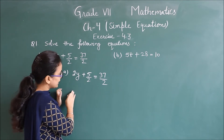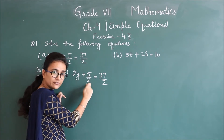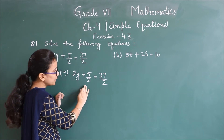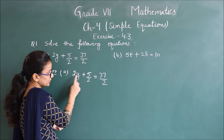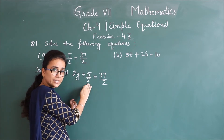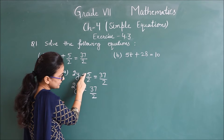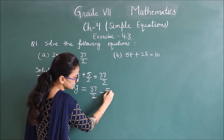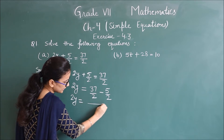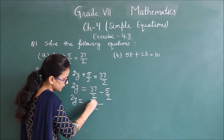तो हमने क्या करना है? पहले हम step by step हर एक step mention करते थे — जैसे 5 by 2 को हटाने के लिए minus 5 by 2 करते हैं दोनों तरफ, फिर 2y में से 2 को remove करने के लिए 2 से divide करते हैं। अब हम इस question को transposition method से solve करते हैं। 2y के साथ plus 5 by 2 है; left side से right में shift करने पर उस term का sign change हो जाएगा। LCM लेते हैं — 2 — like fractions हैं, तो 37 minus 5 directly करते हैं, that is 32. Clear?